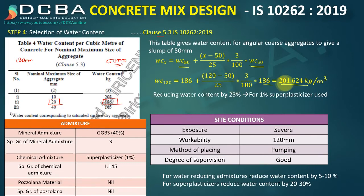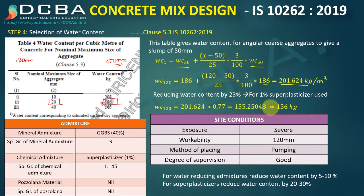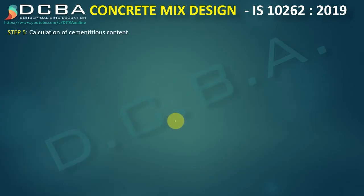Reducing the water content by 23%: 201.624 × 0.77 = 155.25, rounded to 156 kg per cubic meter. This is the water content at 120 mm slump.